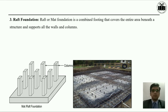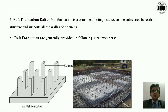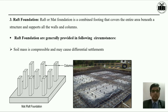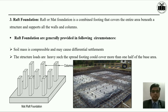The third type of shallow foundation is raft foundation. The raft or mat foundation is a combined footing that covers the entire area within a structure and supports all the walls and columns. In this image, we can see a common raft foundation provided for nine columns. Such kind of raft foundation is generally provided in the following circumstances: when the soil mass is compressible and may cause differential settlement, or when the structural loads are heavy such that the spread footing could cover more than half of the base area.